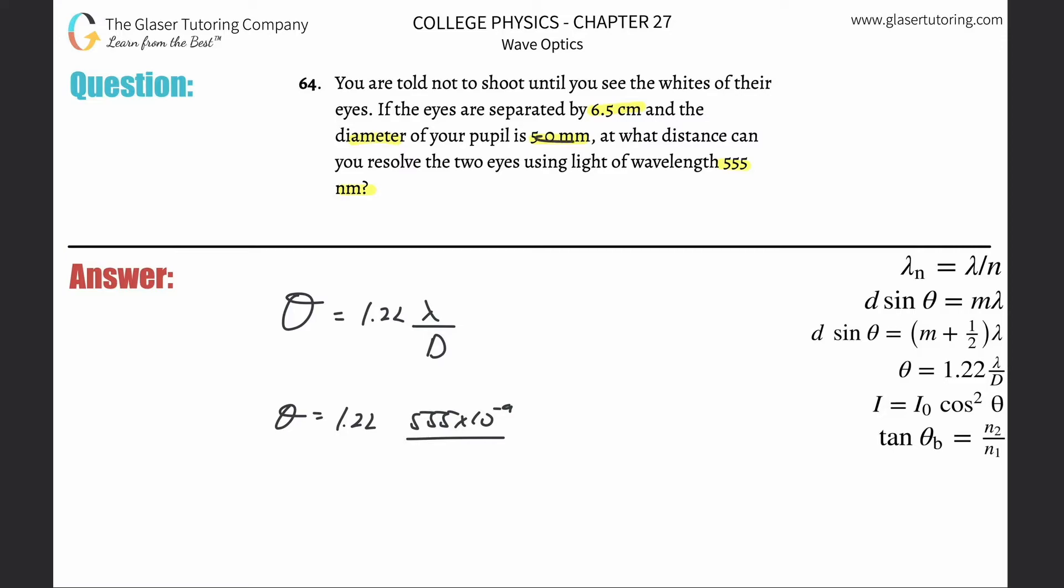Divide that by the diameter of the pupil, which is five millimeters, so that's just 5 times 10 to the minus three.